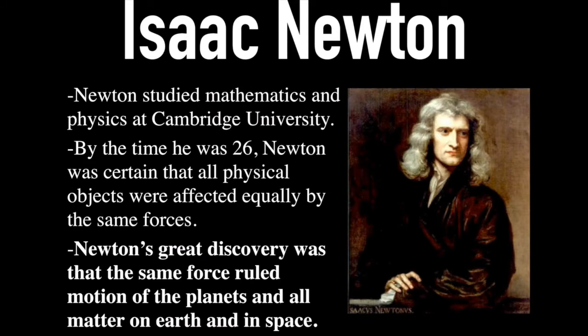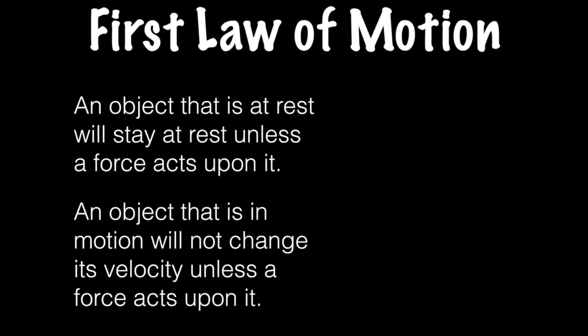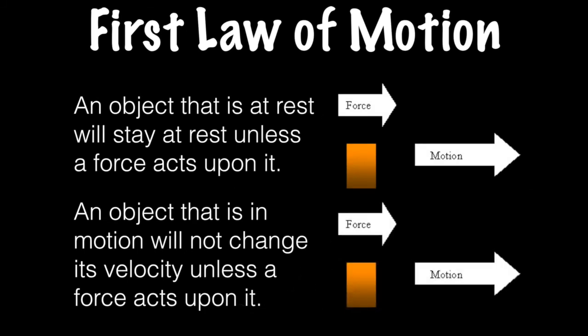Moving on to Isaac Newton: his greatest discovery was that the same force ruled the motion of the planets and all matter on earth and in space. His most famous contribution is his three laws of motion. The first law has to do with inertia: an object at rest will stay at rest until a force acts upon it, and an object in motion will not change its velocity unless a force acts upon it. Something in motion just keeps moving until something acts upon it.